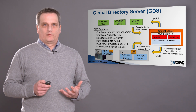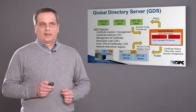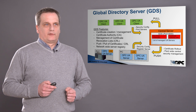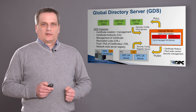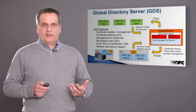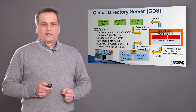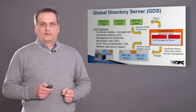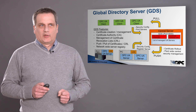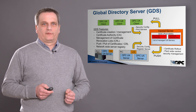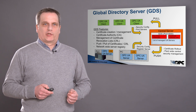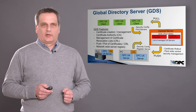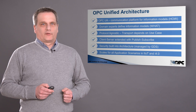So the GDS is used to manage the security in the network. To do so, there are two different ways of accessing this GDS. Typically a client would register and then pull the certificate and the revocation list from the GDS. The server is typically passive — it will register at the GDS but then the GDS will push certificates and the revocation list into the server and keep it up to date with the security.